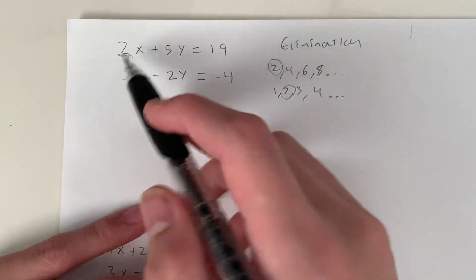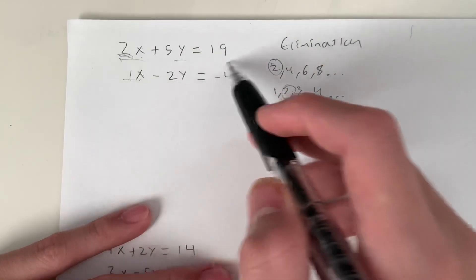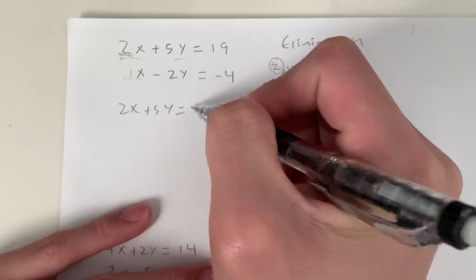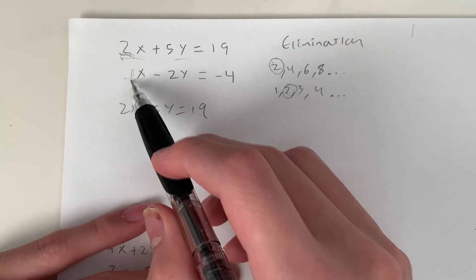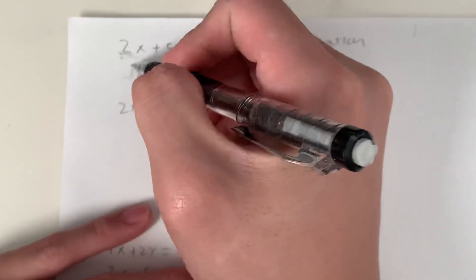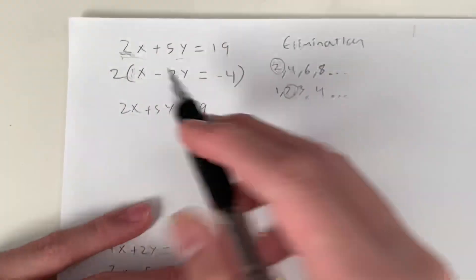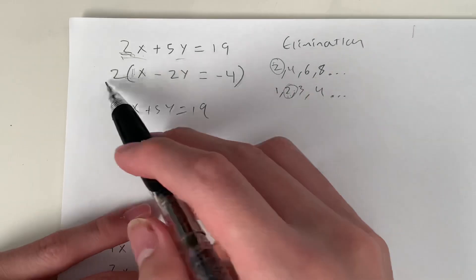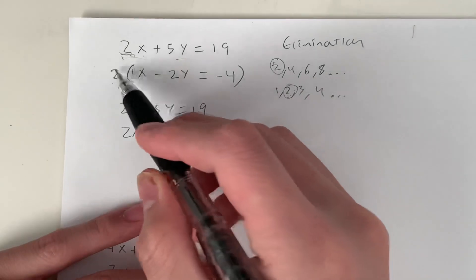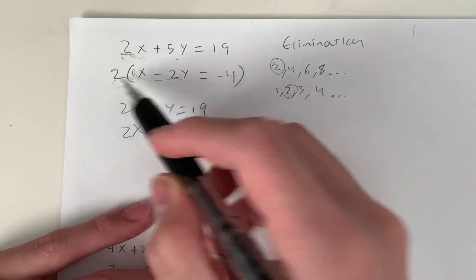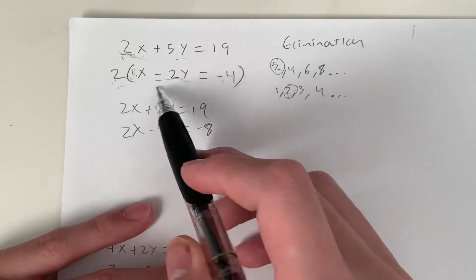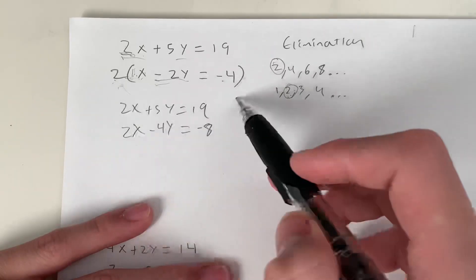So in this case, this one you don't change, right? Because it's already a 2. So you just write down 2x plus 5y equals 19. But for this one, this is a 1. So how do we get from 1 to 2? We multiply by 2. And we have to do this for the entire equation. So 2 times x is 2x. 2 times negative 2y is negative 4y. That's going to equal 2 times negative 4, which is negative 8. Remember, you have to pay attention to the signs and multiply through.